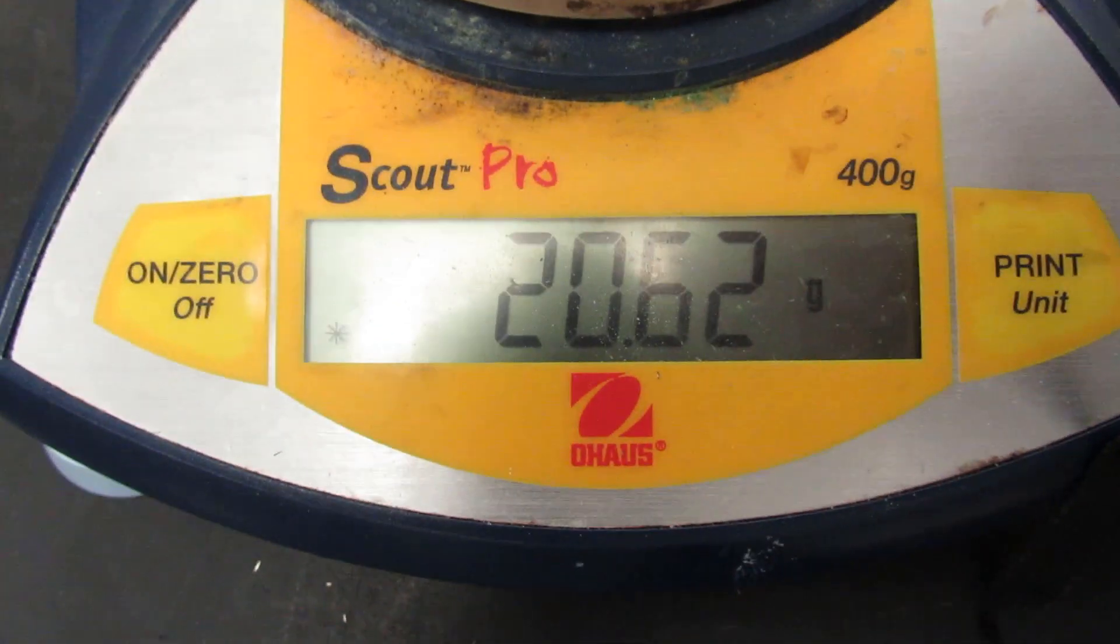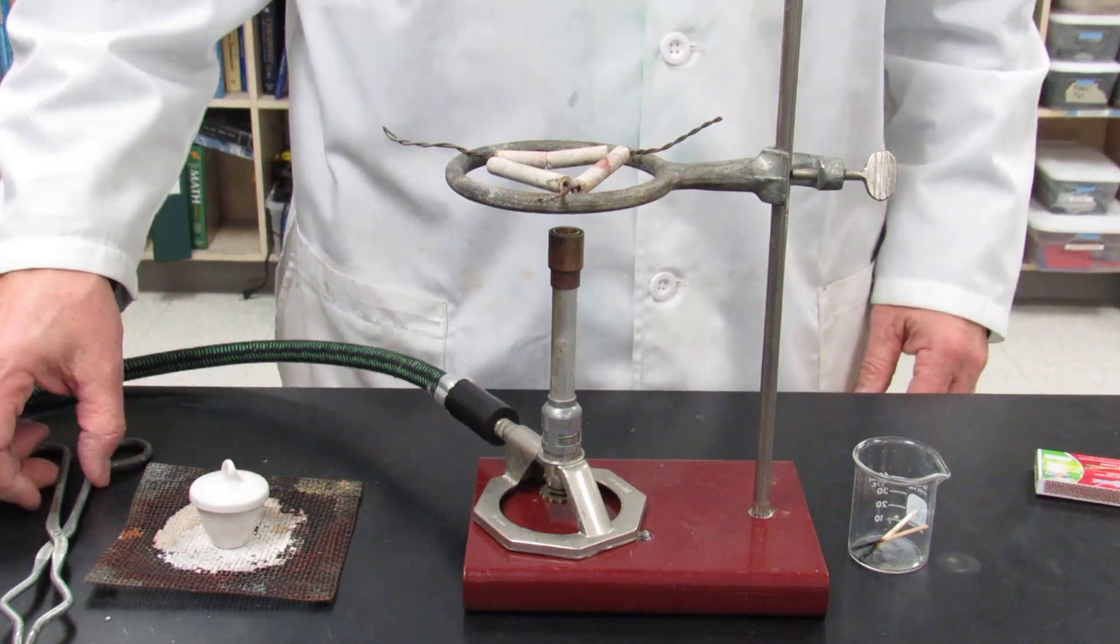Add the lid and then record the mass. The mass of the crucible cover and the magnesium is 20.63 grams.